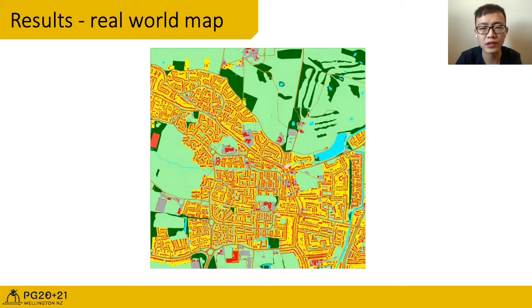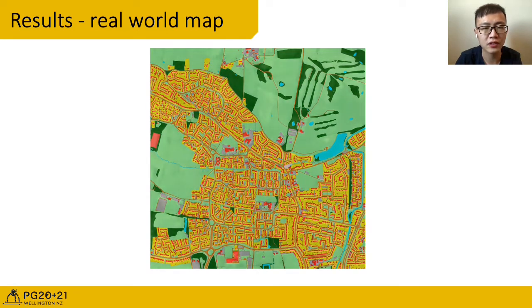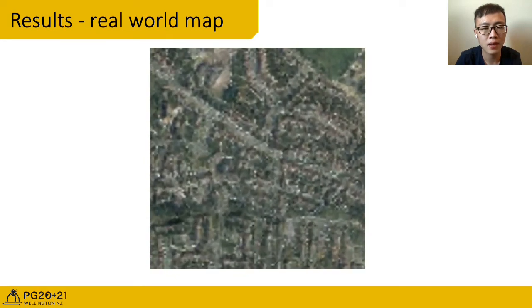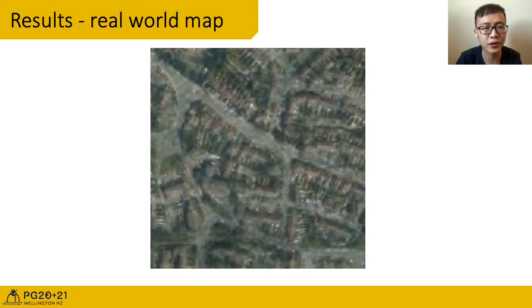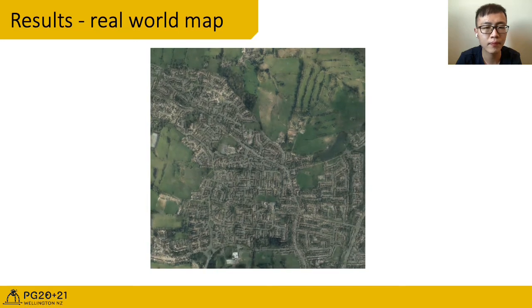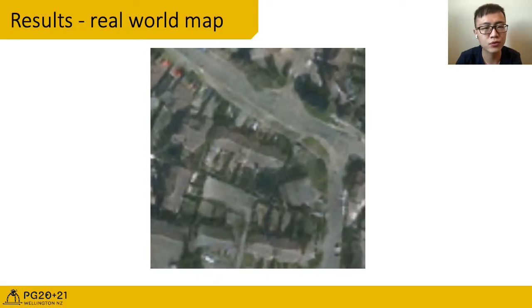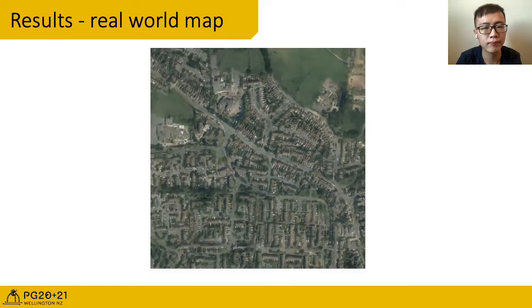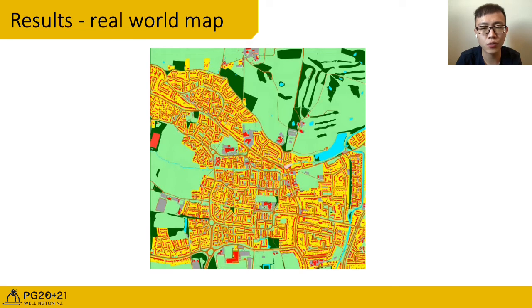Here shows our result, which uses this real-world map as input. We first generate scale level 1 result. And we use this as color guidance to generate scale level 2's results. And we use the scale 2 result to generate scale 3 result. Using networks of only 256 pixel square resolution, we generate these 8000 pixel images.